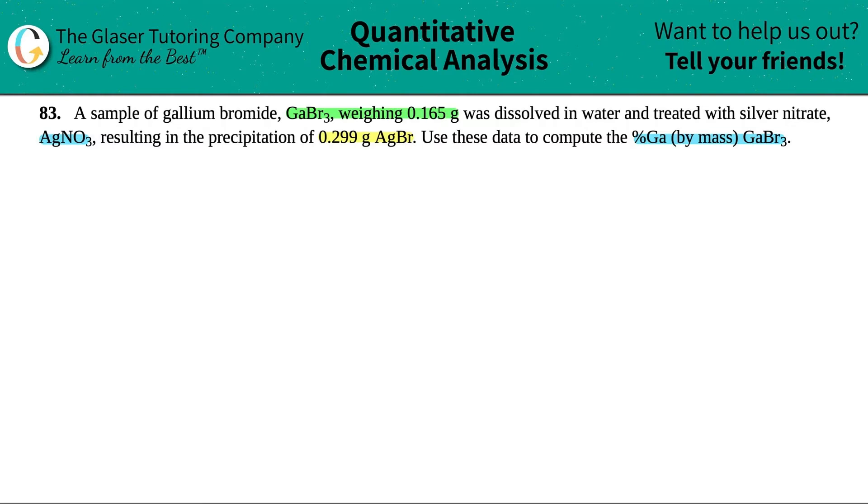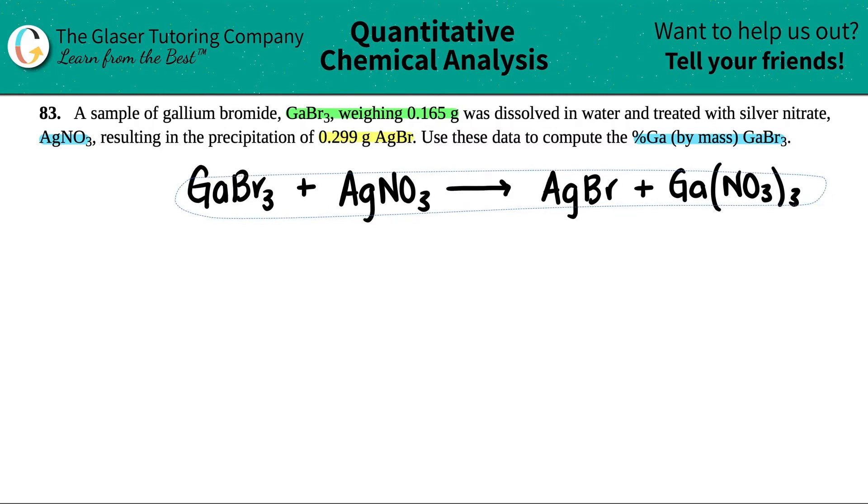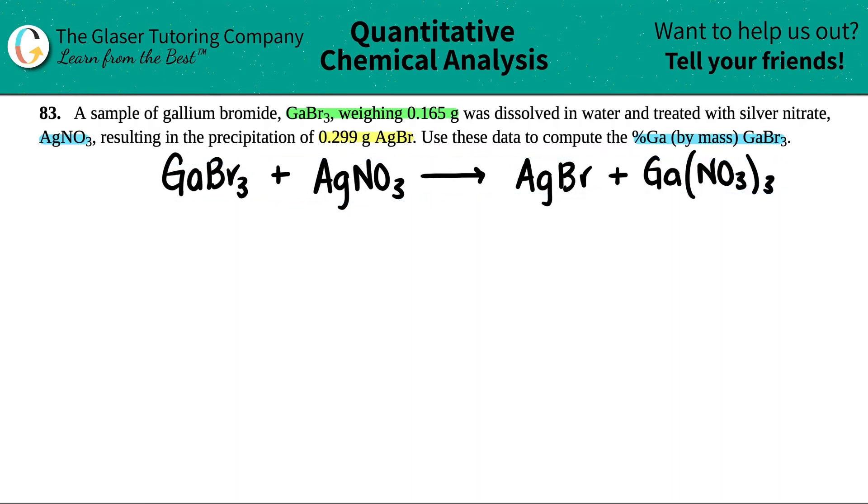In this case, the equation is going to be GaBr3 plus it's being treated with the silver nitrate, AgNO3. This is a double displacement - outers go with outers, inners go with inners. So the first product they gave us was AgBr, and then the other product would be gallium and the nitrate, but it would be Ga(NO3)3 because gallium has a plus three charge. Now I need to balance it. I have three NO3s, so I put a three here. This tells me I have three Ag's, so I put a three here and now we're all balanced.